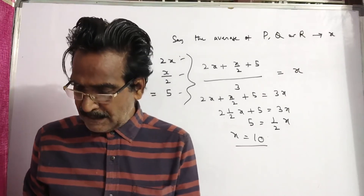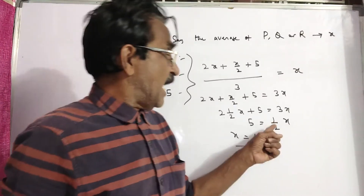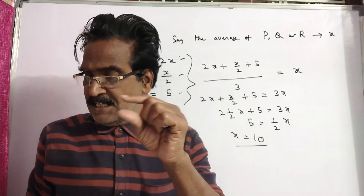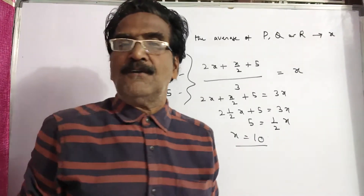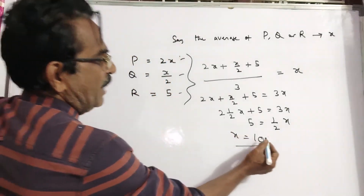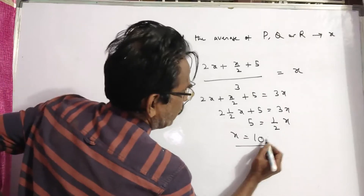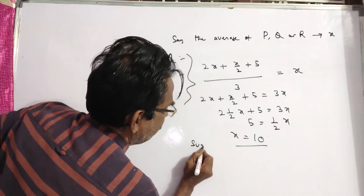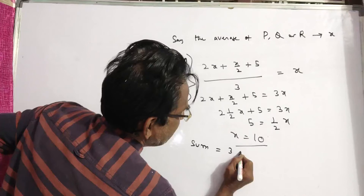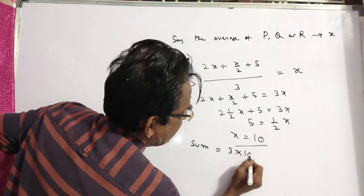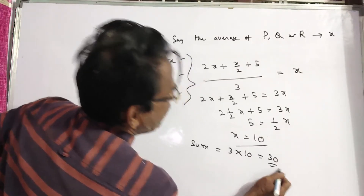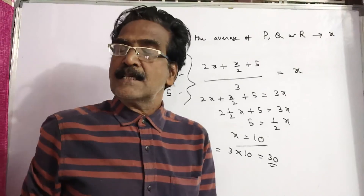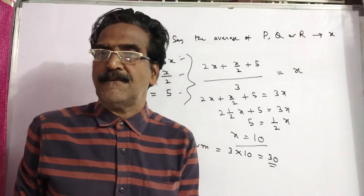Now, what is the question? Let us see. This is the average. The question is: what is the sum? The average of P, Q, R is 10. Then the sum will be 3X — 3 into 10 — which is 30 years. That is the sum of the ages of P, Q, R.